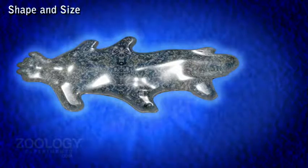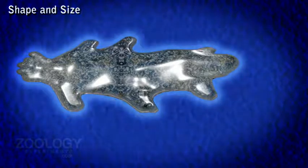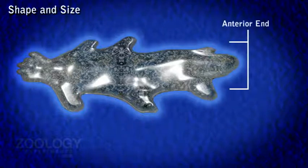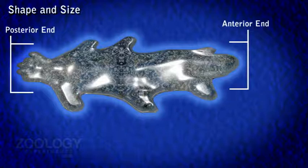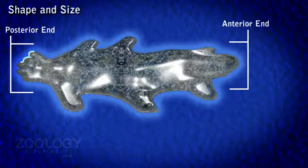When it withdraws all its pseudopodia, it becomes spherical in shape. Far from being shapeless, it has definite anterior and posterior ends. At the anterior end, the animal puts out pseudopodia, while the posterior end is marked by a wrinkled region called the uroid.